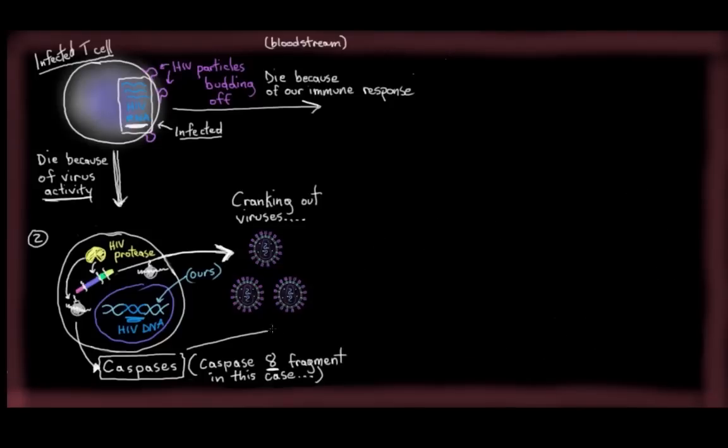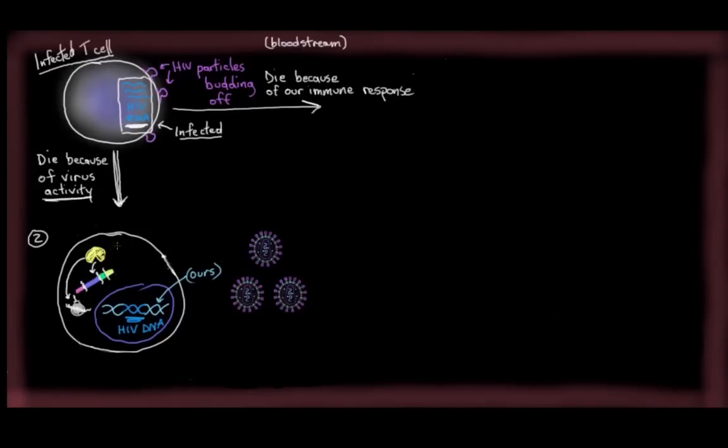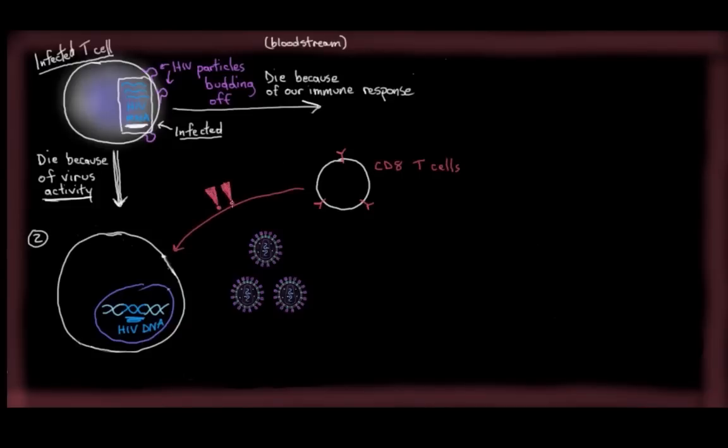So, there are other ways that infected T cells can die too. For example, we've got another group of T cells called CD8 T cells. And when they see an infected CD4 cell, they get pretty upset and they'll kill it off. And the reason it knows the CD4 cell is infected, by the way, is because infected CD4 cells start to display certain HIV proteins on their surface. For example, maybe they'll start to display ones from the HIV envelope, like GP120.